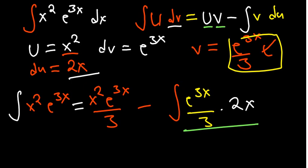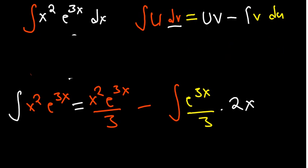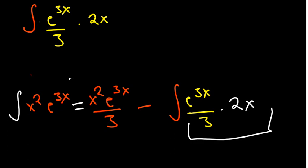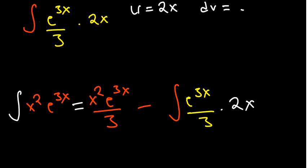Now we need to simplify the remaining integral: e to the power 3x over 3 multiplied by 2x. This is again a product of two functions, so we apply integration by parts once more. Exponentials come last in LIATE, so our u is 2x and dv is e to the power 3x over 3.